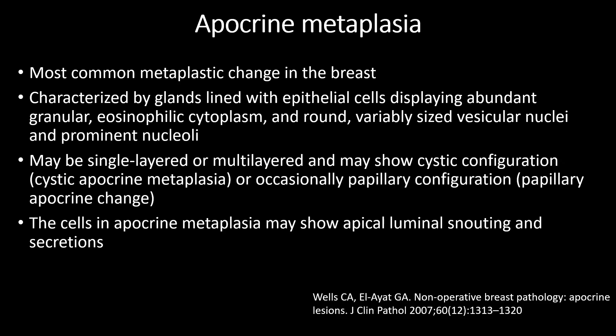Apocrine metaplasia is the most common metaplastic change in the breast. These are characterized by glands lined with epithelial cells displaying abundant granular eosinophilic cytoplasm and round, variably sized, vesicular nuclei and prominent nuclei. These may be single-layered or multi-layered and may show cystic configuration, as in cystic apocrine metaplasia, or occasionally papillary configuration, called papillary apocrine change. The cells in apocrine metaplasia may show apical luminal snouting and secretions.